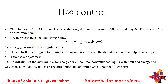The H-infinity control problem consists of stabilizing the control system while minimizing the H-infinity norm of its transfer function, where the H-infinity norm is described by sigma-max, the maximum singular value. This controller is designed such that even if the worst-case disturbance — the maximum upper bound of disturbances — is present in the system, the controller still works.